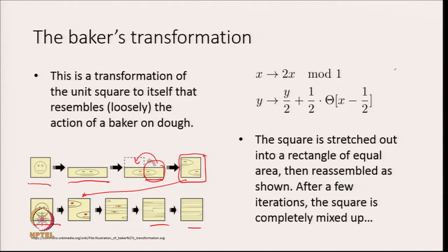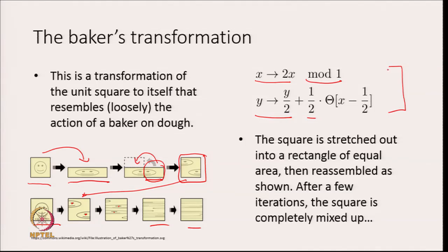The actual map written algebraically is: x goes to 2x, and y goes to y/2 — that was the first part of the transformation. In the second part we apply the mod 1 operation, so that points no longer bigger than 1 are taken back and you add one half depending on where x was. Sitting down with a piece of paper, you can verify this mapping is exactly the Baker transformation.